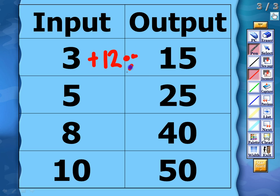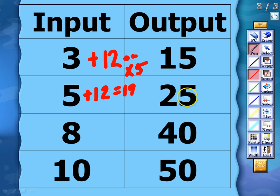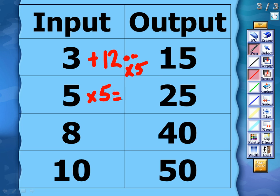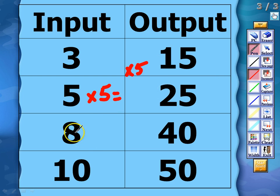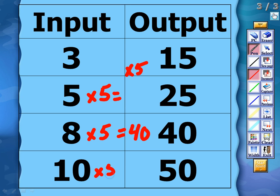So I'll test both options on the next input. If I add 12 to 5, that gives me 17, and that does not give me 25. However, if I multiply 5 by 5, that does equal 25. It seems like the rule is multiply by 5. Continuing: 8 times 5 gives me the output of 40, which is correct, and 10 times 5 gives me 50 as well.